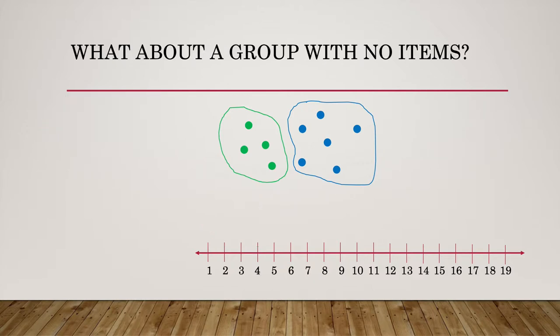Let's talk about what about a group with no items? Yep. Let's get rid of that group and we get rid of all our items. And now we can say this group has how many items? Zero. Where is zero on the number line? Nowhere. So when we wrote our number line the first time, we did not put the all important zero.